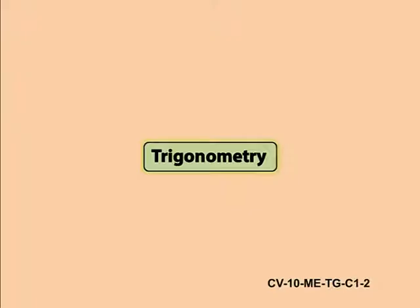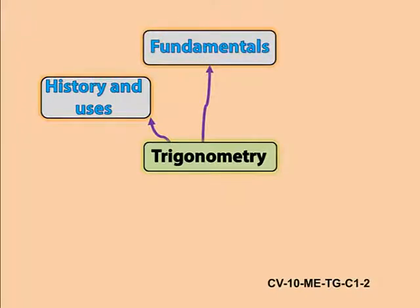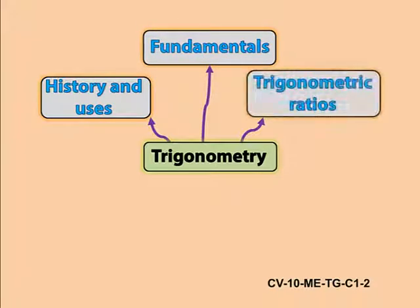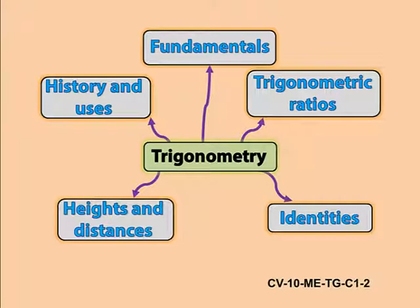In this chapter, the learning points are history and uses of trigonometry, fundamentals of trigonometry, trigonometric ratios, trigonometric identities, and use of trigonometry in finding heights and distances.